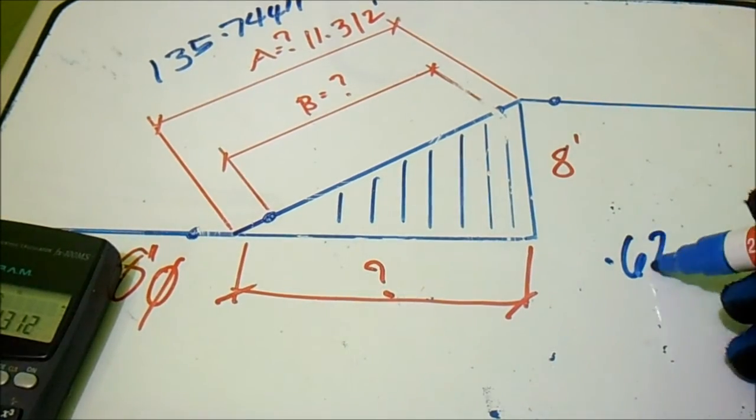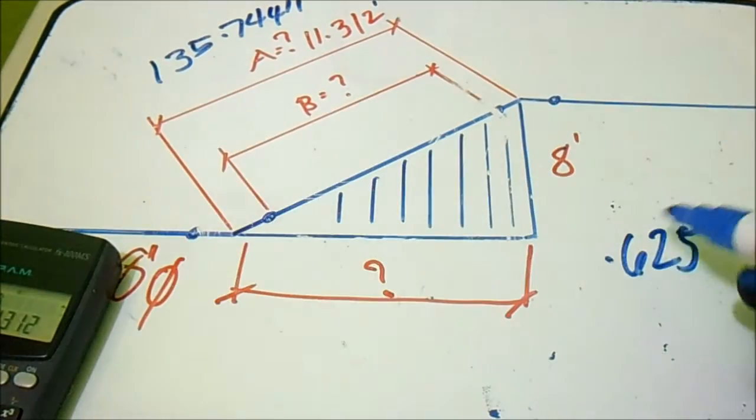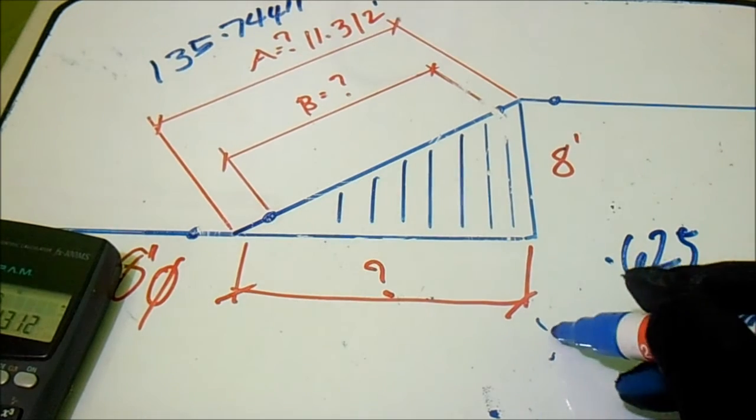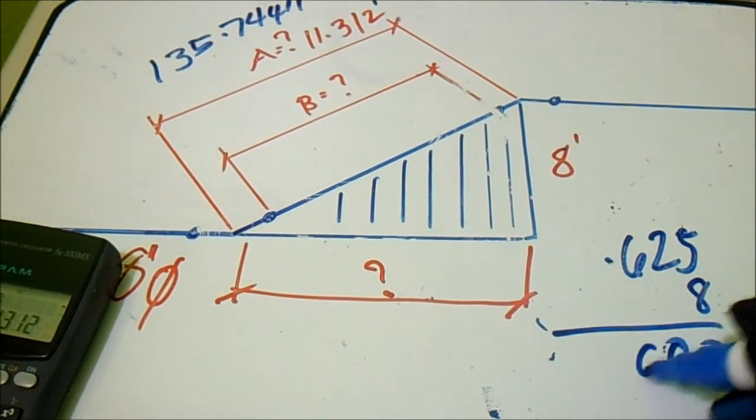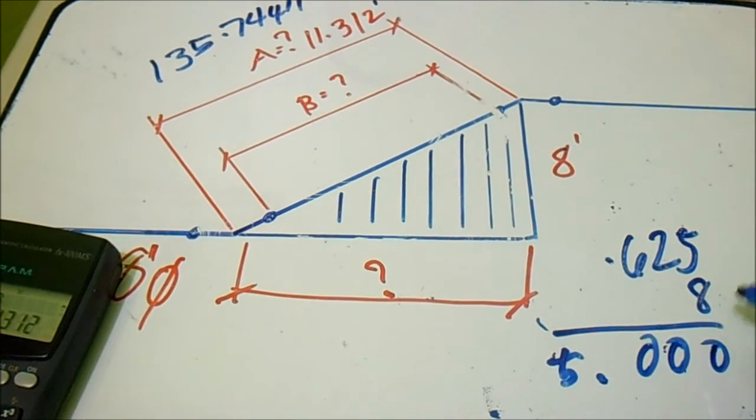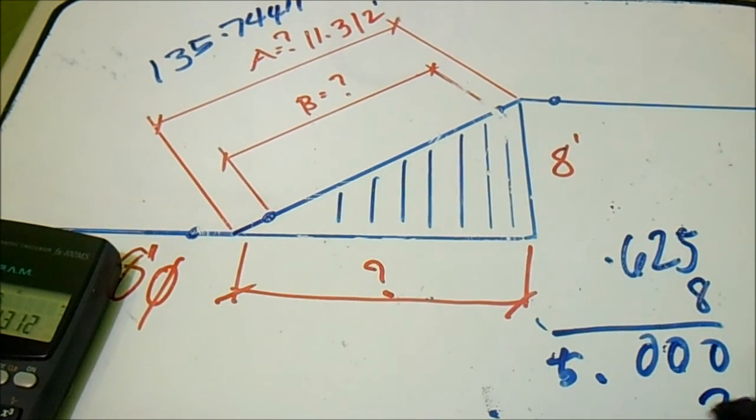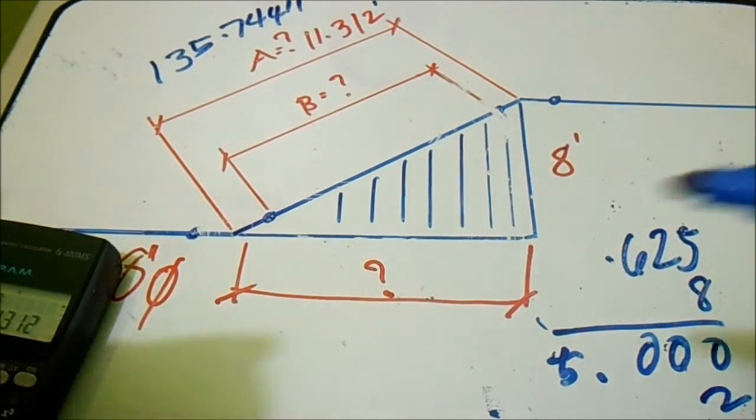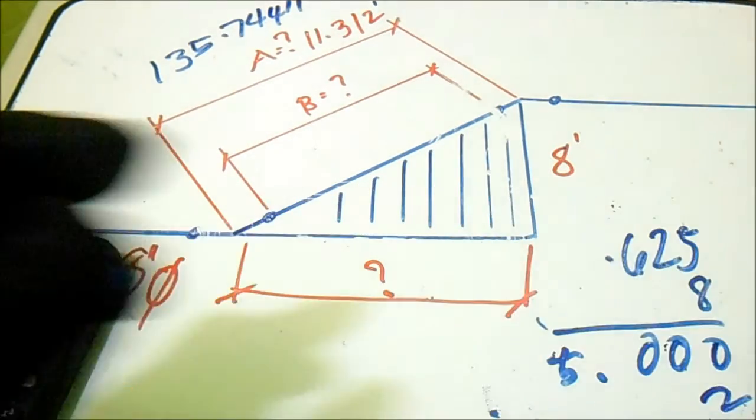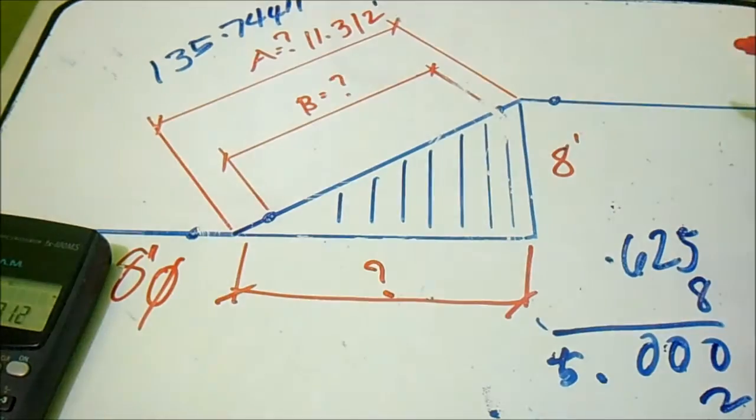0.625 multiply it by 8 to get the takeoff. 0, 0, 0, 0, then 5. We have 2 elbows, so this is 10. Our takeoff is 10.